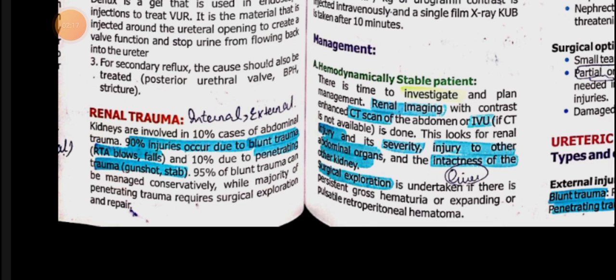Now let's see renal trauma. Renal trauma can be two types: blunt trauma or penetrating trauma. Blunt trauma means a blunt object — for example, someone has been hit directly in the kidney region. It does not penetrate the kidney; the skin remains closed.